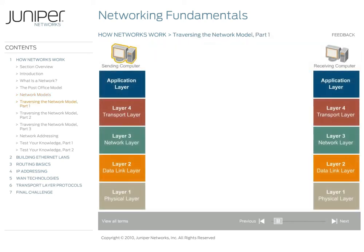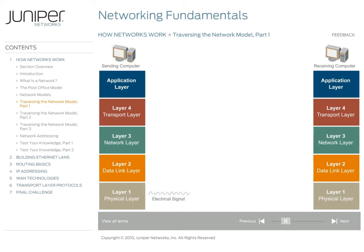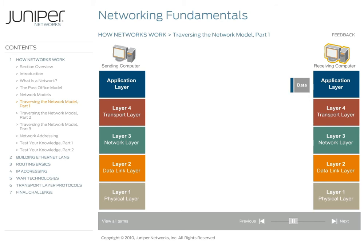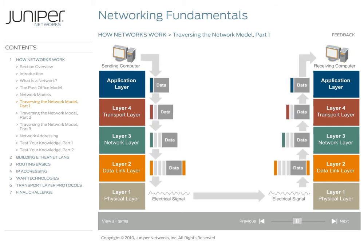Now let's take a closer look at how data is sent from one computer to another. We'll use the five-layer network reference model as a guide, and we'll also employ the post office model we discussed earlier to illustrate some concepts. At each layer of the network reference model, specific information is added about what type of data you are sending and where it's going. Ultimately, your data is converted to electrical signals, transported over the network, and then processed by the receiving computer. Now let's examine what specifically happens in each layer, including which protocols are used.